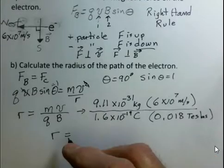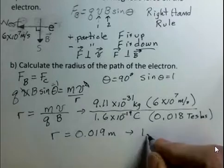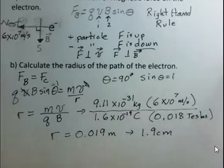And I came up with a radius of 0.019 meters. And if I convert that to centimeters, I have to move two places, 1.9 centimeters. Of course, this is assuming the electron doesn't hit anything. We're working in a vacuum. But that would be the radius of the circle.